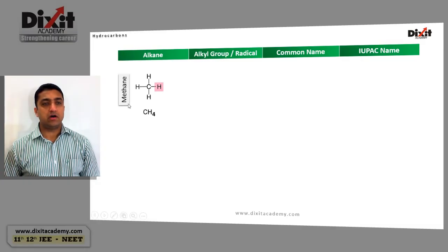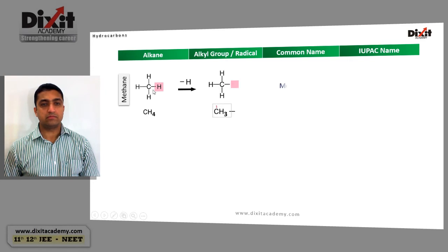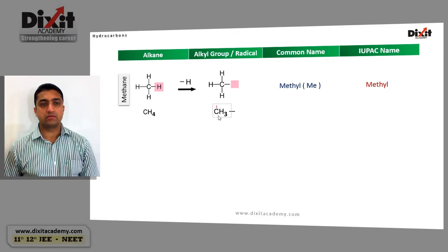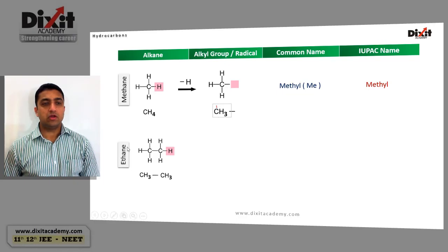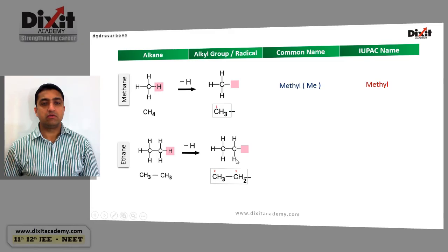The first member of the alkyl series is methane, CH4. If we remove a hydrogen atom from the carbon atom, we get the CH3 group. In both the common and IUPAC system, it is called methyl. The next homologue of methane is ethane, with structural formula CH3CH3. In ethane, both carbon atoms are primary. If we remove any one of the hydrogens, we get the CH2CH3 group, which is called ethyl in both the common and IUPAC system.